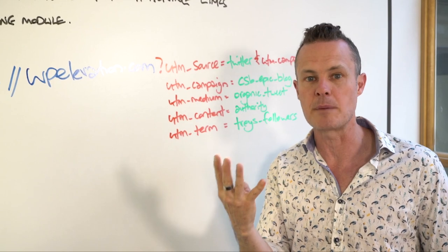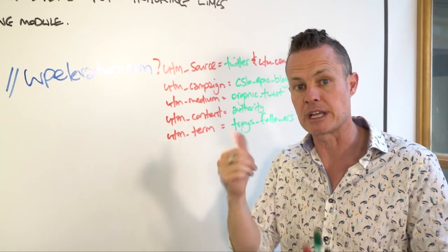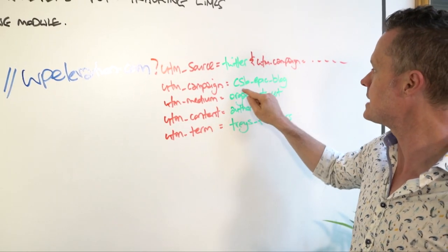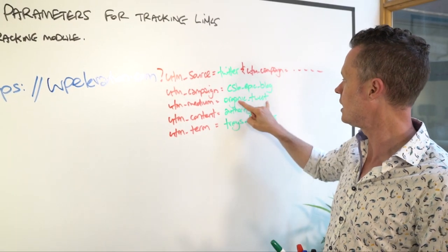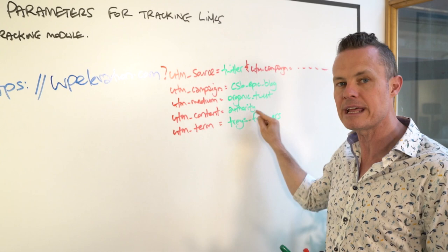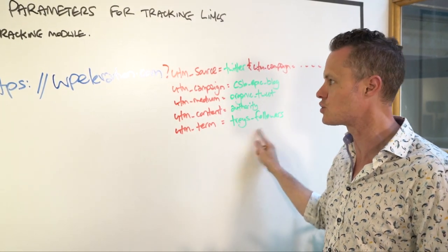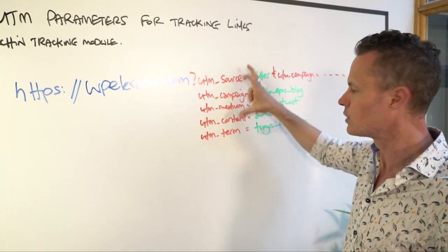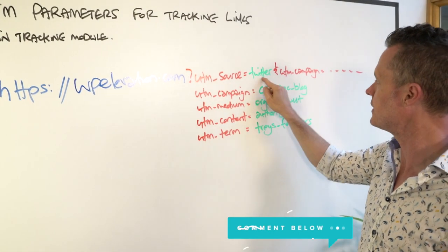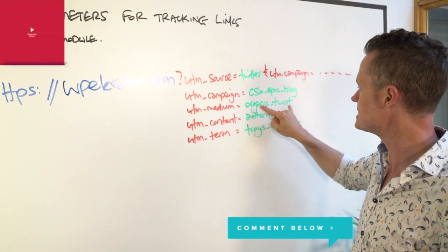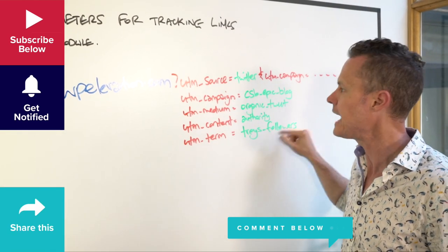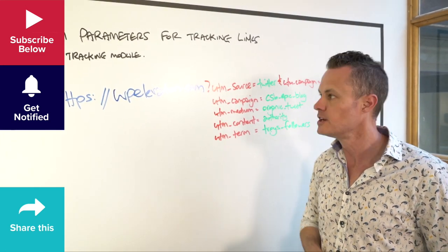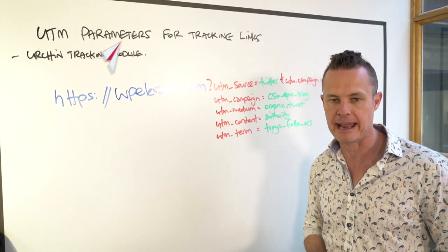The epic blog post walks through the four different types of campaigns to structure a content strategy: awareness, authority, engagement, and conversion. In this particular example, I've used Twitter to send people to my content strategy blueprint epic blog post, using an organic tweet, mentioning the authority campaign, and sent that out to Troy's followers. All of that pieced together gives you a huge link, and if you look at the link you can reverse engineer the source, campaign, medium, content, and term. All of this information will be reflected in your Google Analytics, which you can then plug into any of your other marketing dashboards. So that in a nutshell is UTMs — what they are and how we use them.